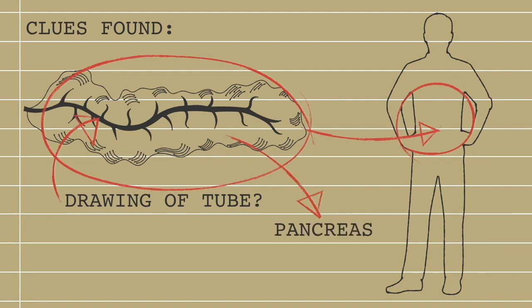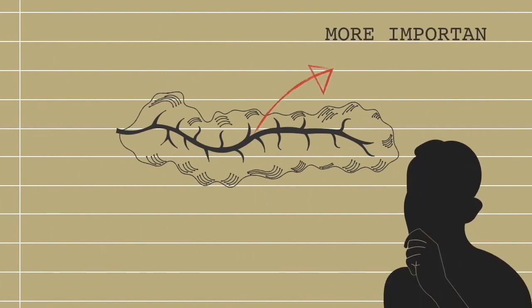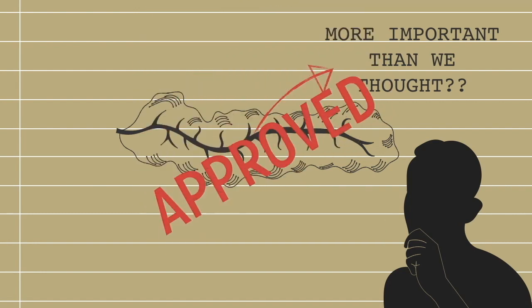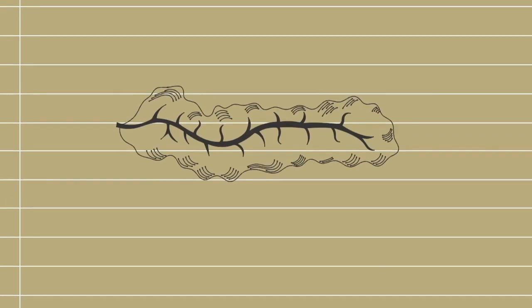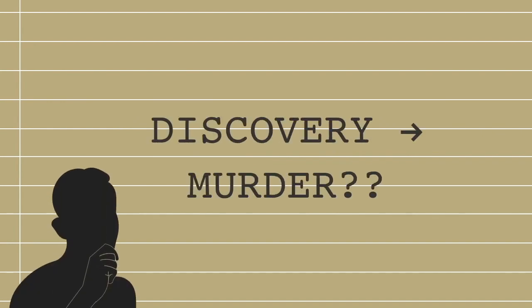This allowed Professor Wiersung to deduce that the pancreas may have a more important, previously unknown purpose. In celebration of his finding, this tube was named the duct of Wiersung. But did his discovery cost him his life?